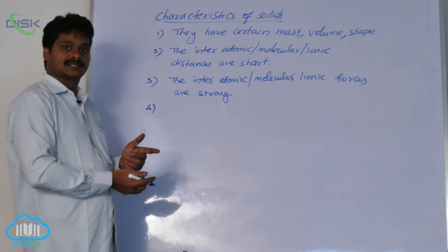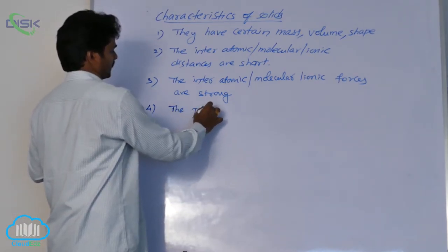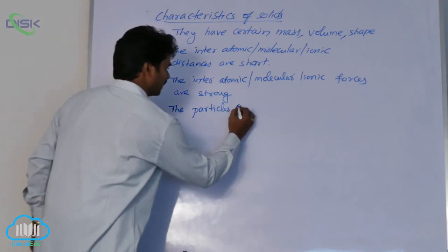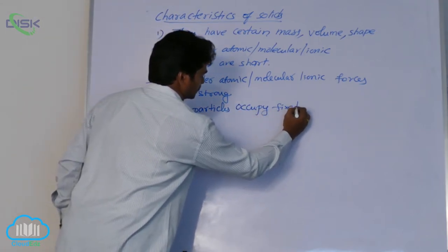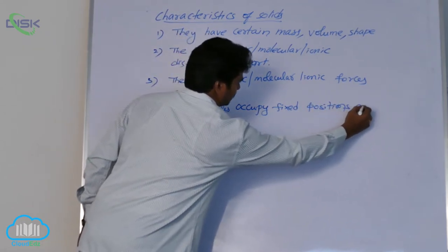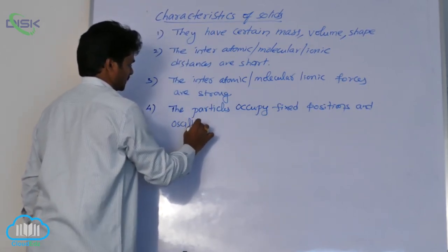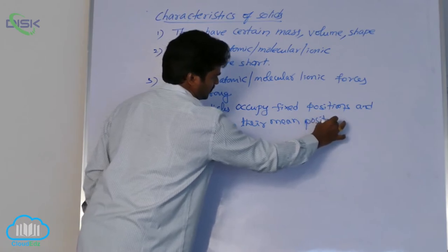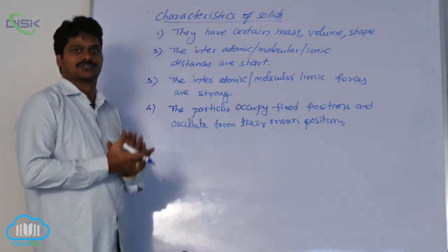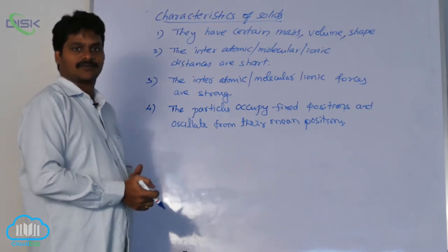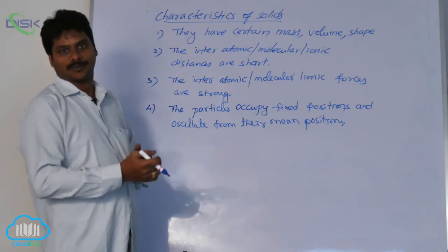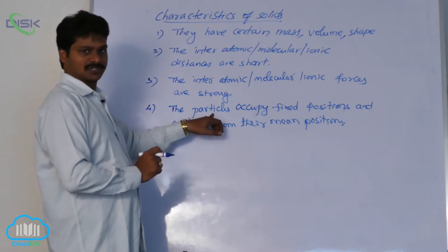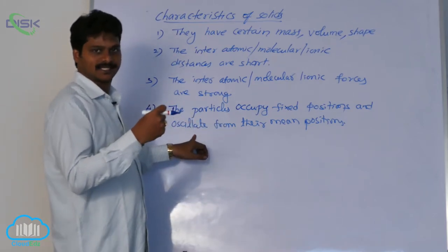The fourth one: in solid state, the particles occupy fixed positions. Particles may be atoms, molecules, or ions. They occupy fixed positions and oscillate about their main positions. In liquids and gases, particles move freely — in gases they have very high movement, while in liquids they move only when pulled. But in solid state, particle positions are fixed and they only oscillate about their main positions.